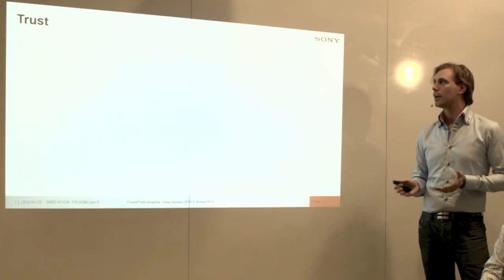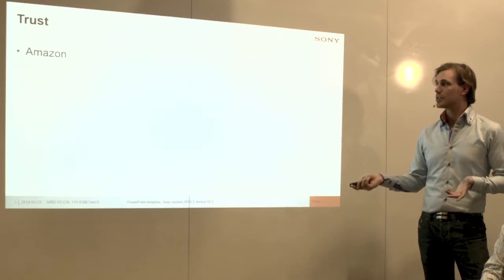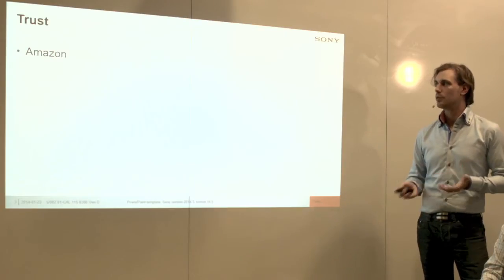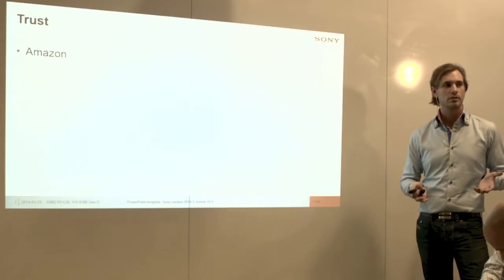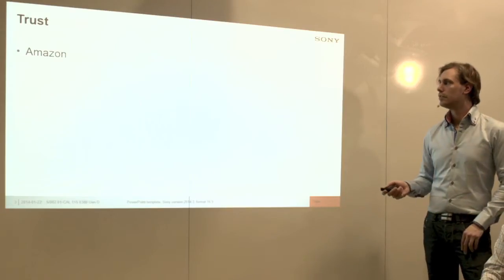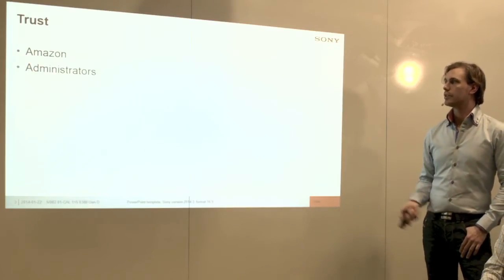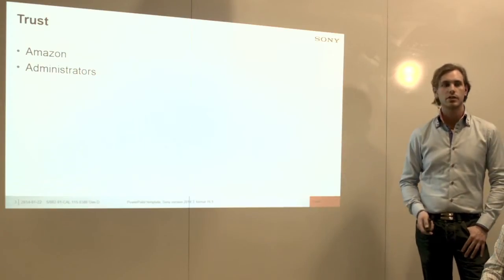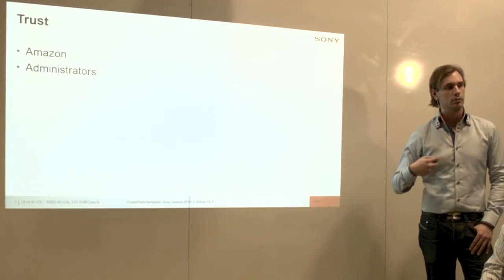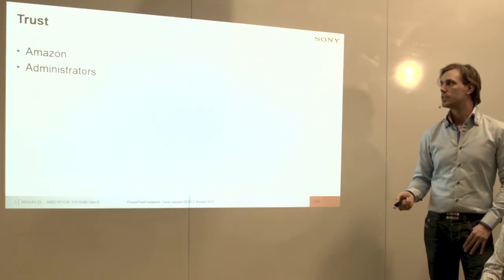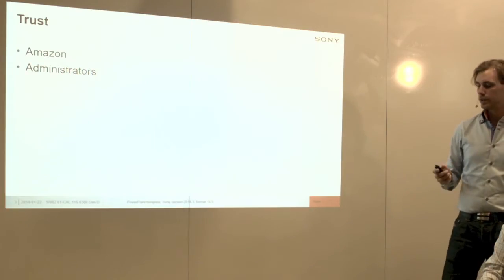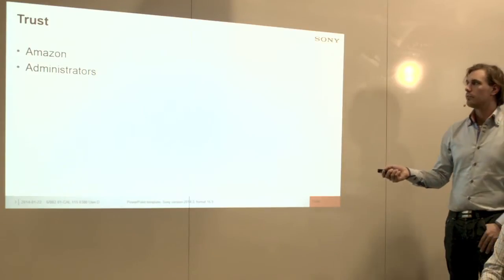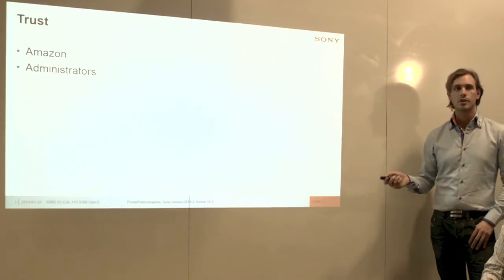If we're running everything in the cloud, we need to trust Amazon, which hosts our cloud. If we can't trust Amazon, we can't protect our data because they're the ones actually holding the data. We also have to trust our administrators, because if we can't trust them, they're the ones who have the encryption keys — someone needs to upload them. If you can't trust your administrators, you can't secure your data. These two are more or less the only people we actually have to trust.